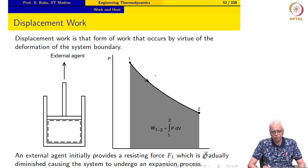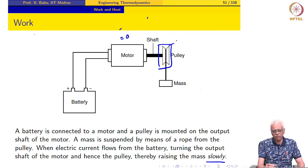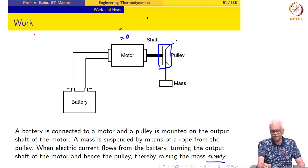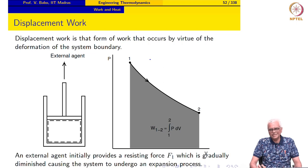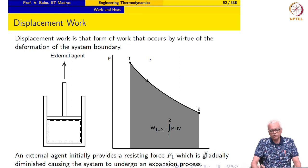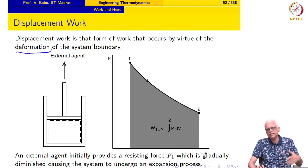We now turn to displacement work. In the previous discussion we referred to different types of work: the battery provides electrical work, and the motor puts out shaft work. There are different forms of work, and we will develop expressions for each one, starting with displacement work. Displacement work is that form of work that occurs by virtue of the deformation of the system boundary — whenever there is deformation of the system boundary, there is a work interaction between the system and the surroundings.